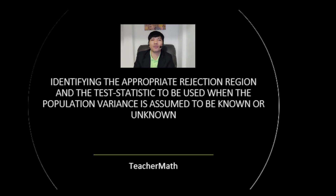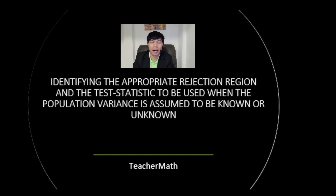Welcome back to our tutorial. For today's lesson, we'll be identifying the appropriate rejection region and choosing the correct test statistic when dealing with hypothesis testing. Specifically, we'll explore scenarios where the population variance is assumed to be known or unknown, and we'll also solve problems involving tests of hypothesis on the population mean. So let's get started.